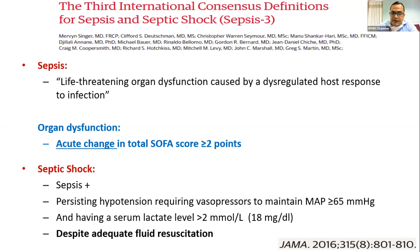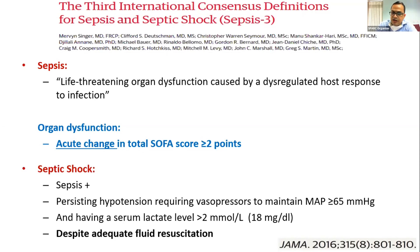To be defined as sepsis, there must be a dysregulated host response — meaning because of any infection anywhere in the body, there must be organ dysfunction, which you can define through the SOFA score. The SOFA — Sequential Organ Failure Assessment — score is commonly used for critically ill patients.